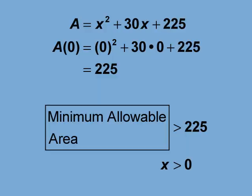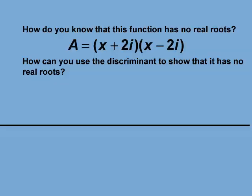Let's look at a final example. How do you know that this function has no real roots? A equals the quantity x plus 2i times the quantity x minus 2i. How can you use a discriminant to show that it has no real roots?